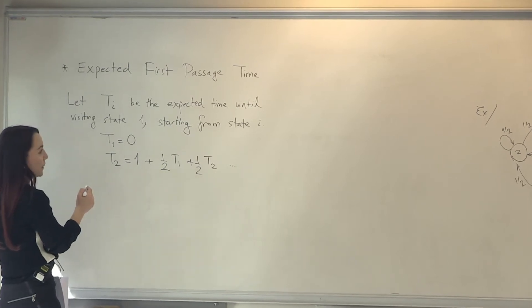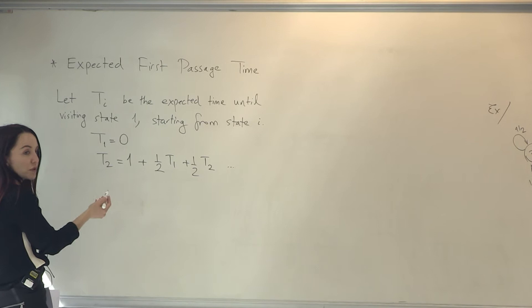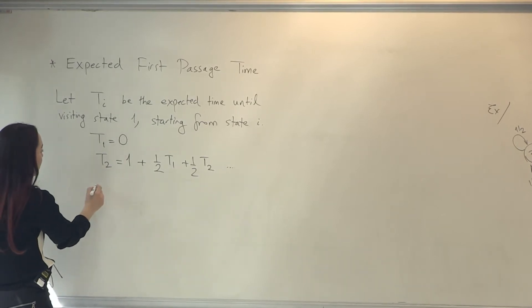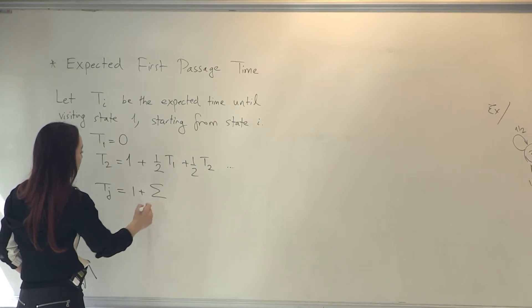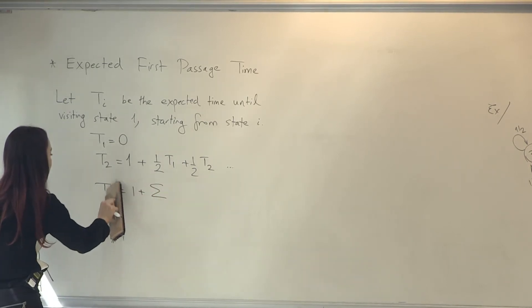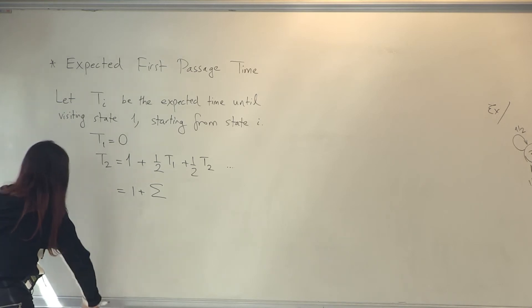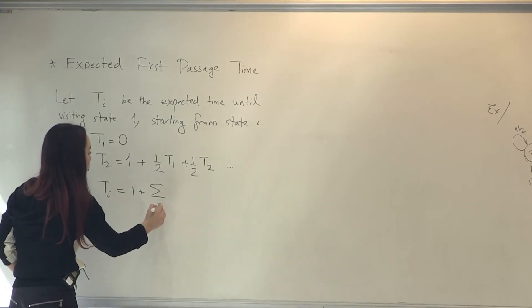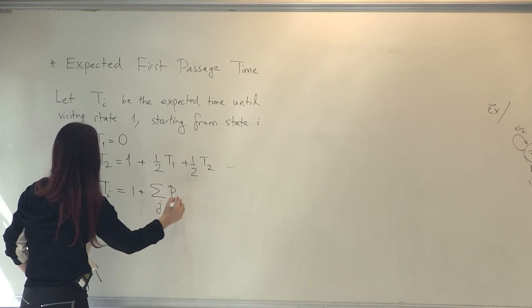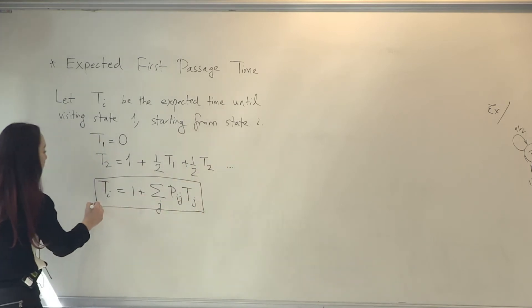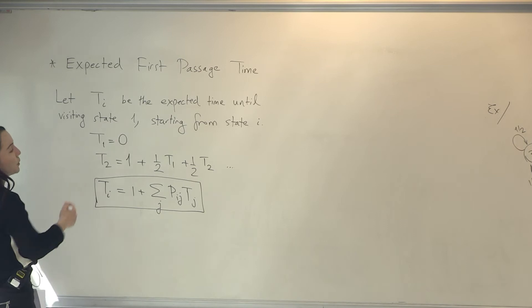In fact, first of all, let me write the general set of equations in this case. T sub i is equal to 1 plus summation over all j, Pij times Tj.